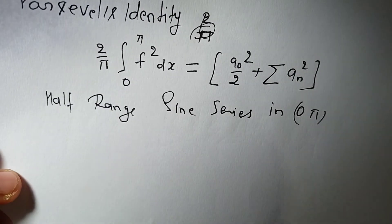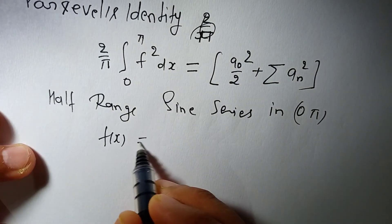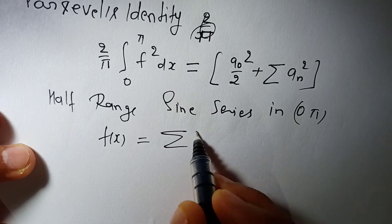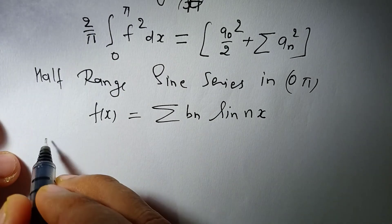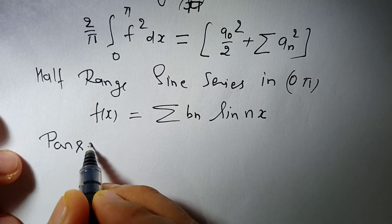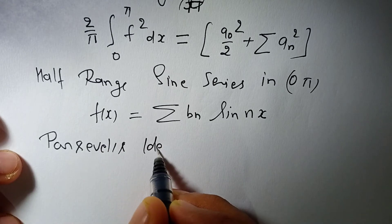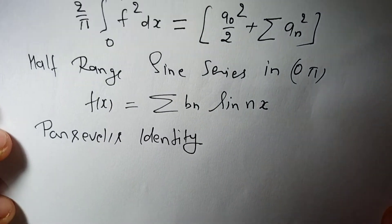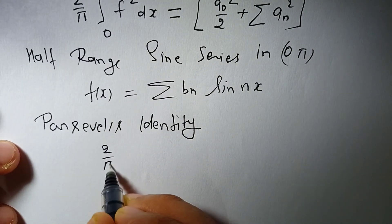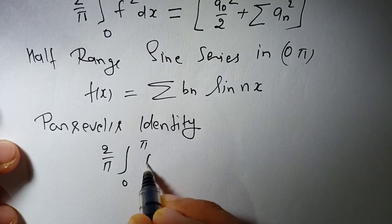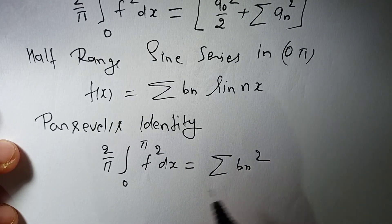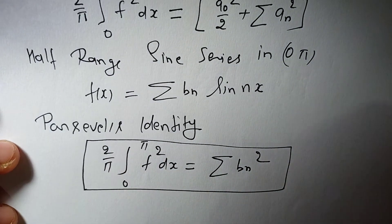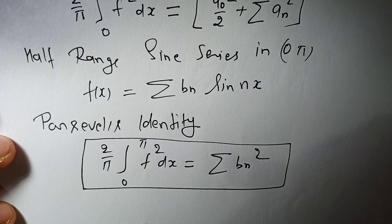For the half-range sine series on [0, π]: f(x) = Σ bₙ sin(nx). Then Parseval's Identity for the half-range sine series is: (2/π)∫₀^π f² dx = Σ bₙ².